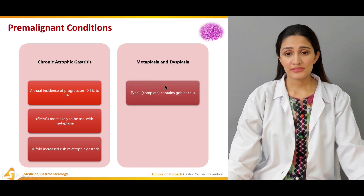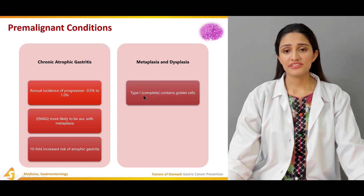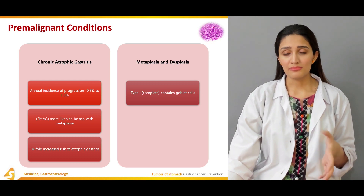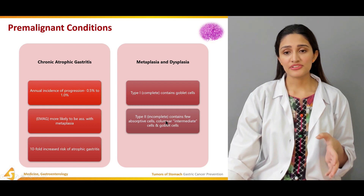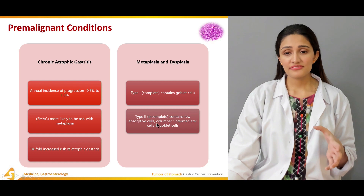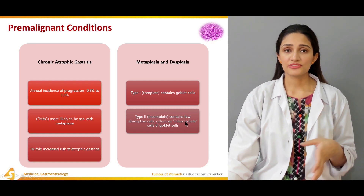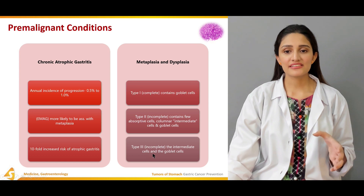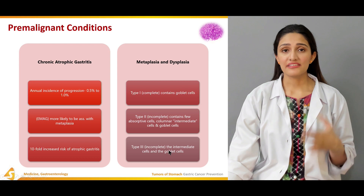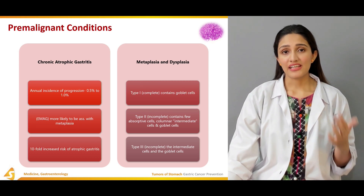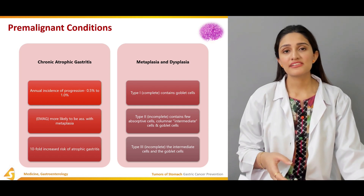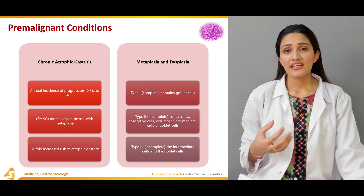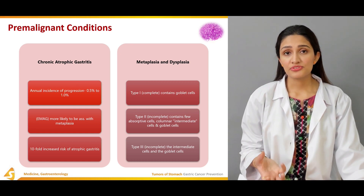Regarding metaplasia and dysplasia, there are three types. Type 1 is complete metaplasia containing goblet cells. Type 2 is incomplete metaplasia containing a few absorptive cells, columnar intermediate cells, and goblet cells. Type 3 is also incomplete, containing intermediate cells and goblet cells. These types of metaplasia within the stomach epithelium can predispose to gastric cancer. Specifically, gastric ulcers are more prone to developing gastric cancer.